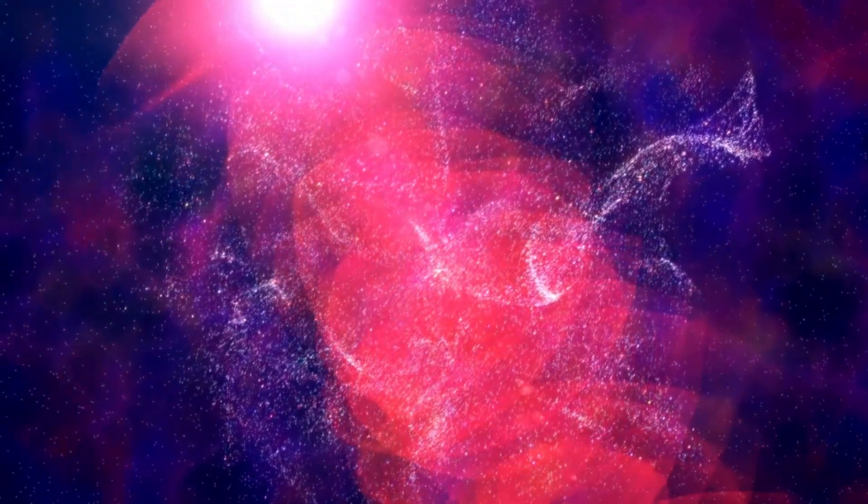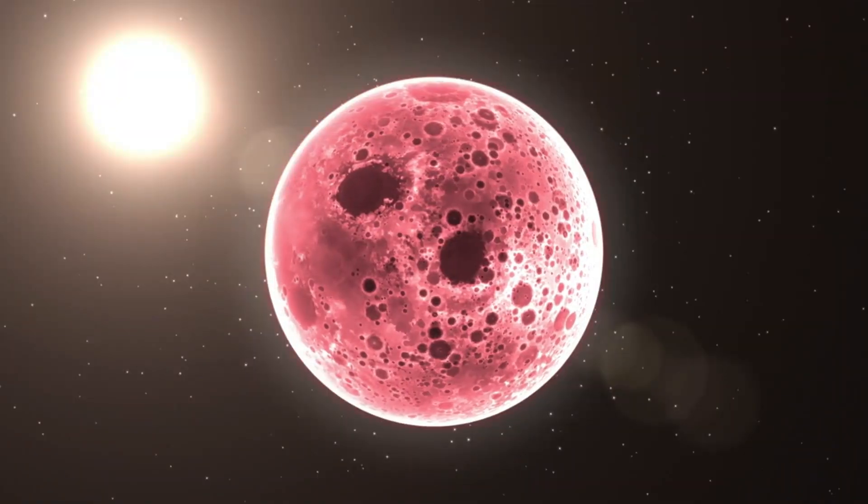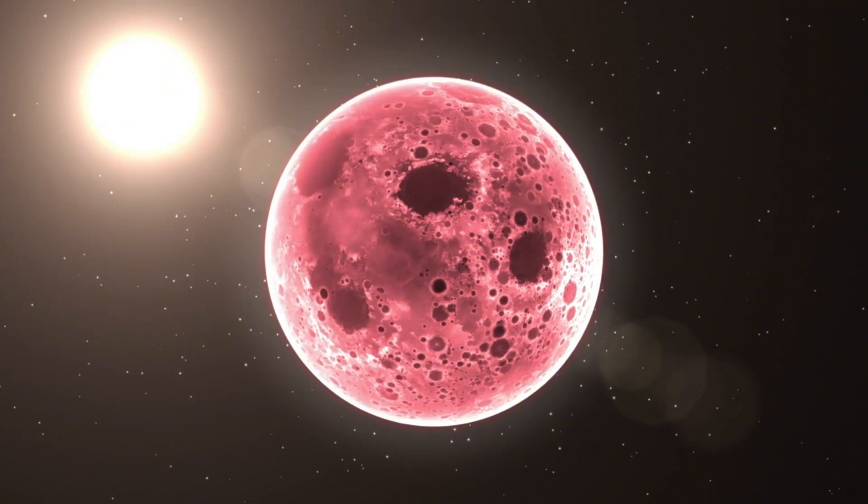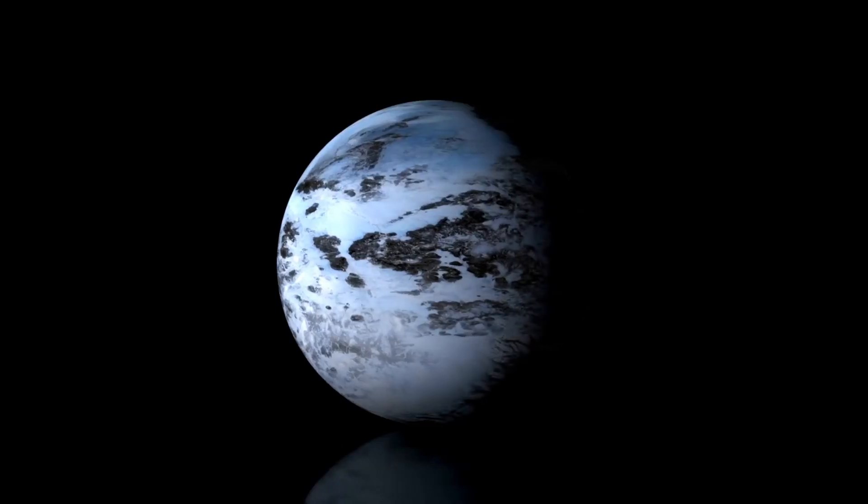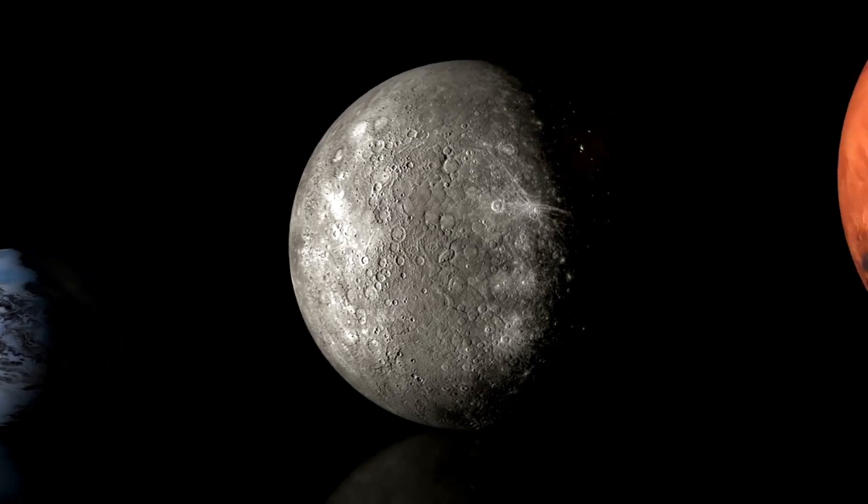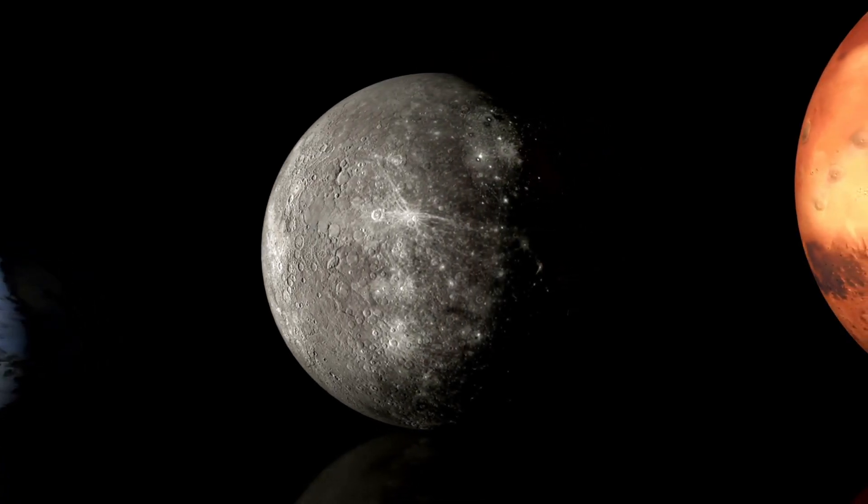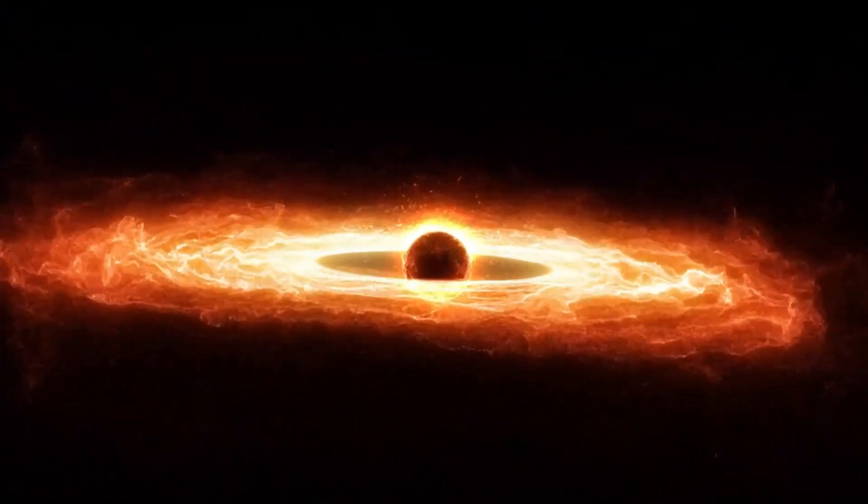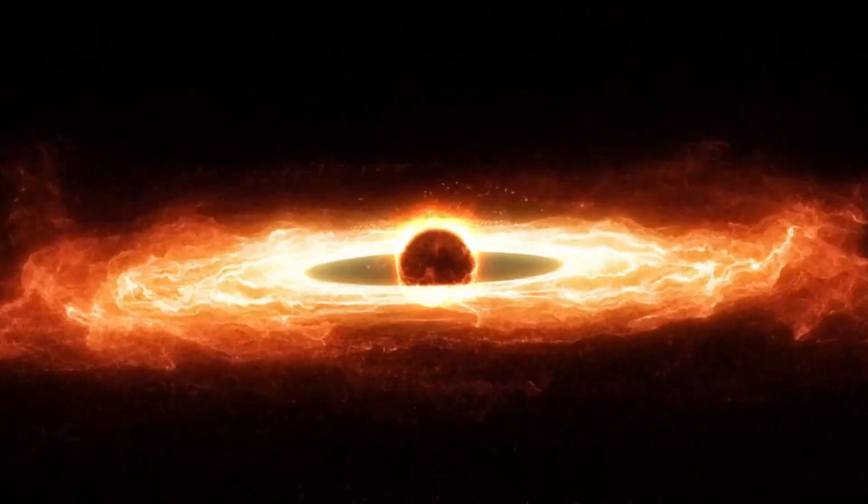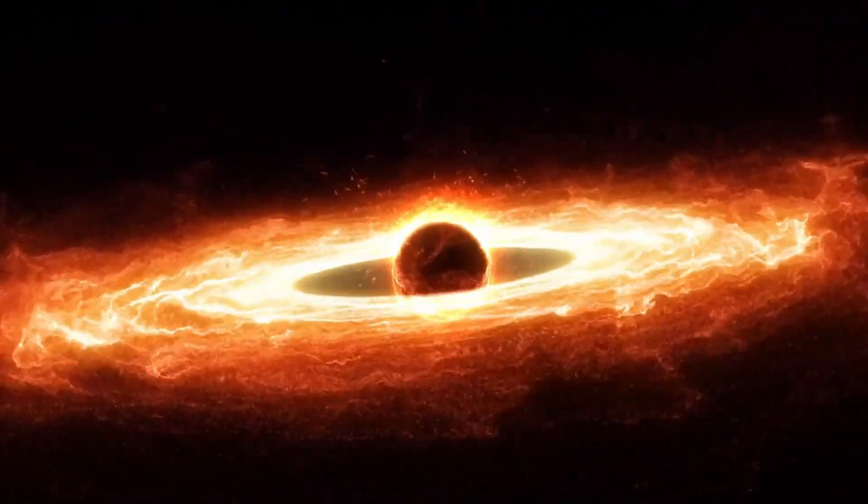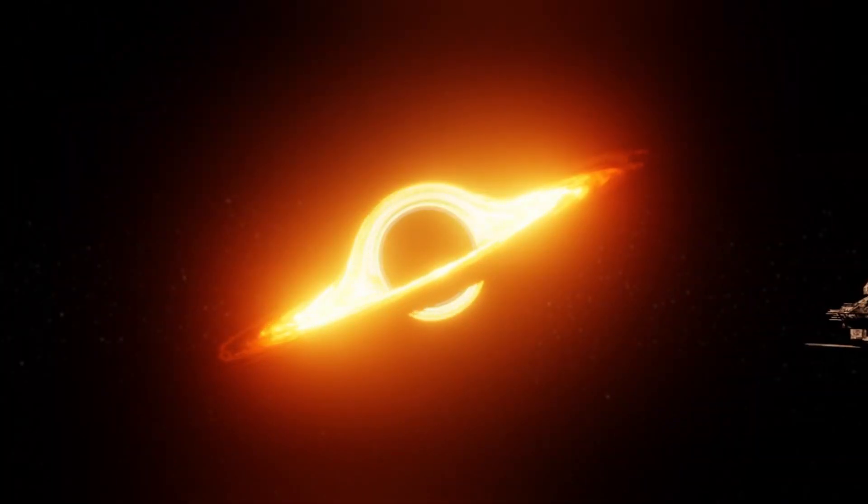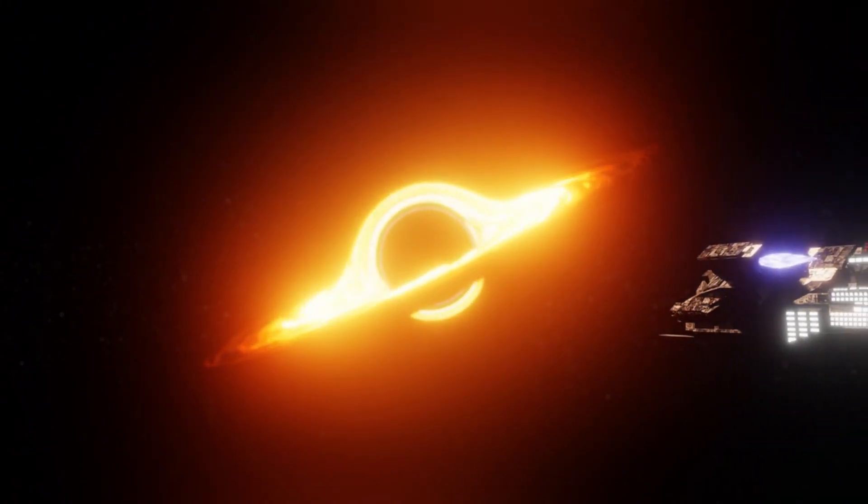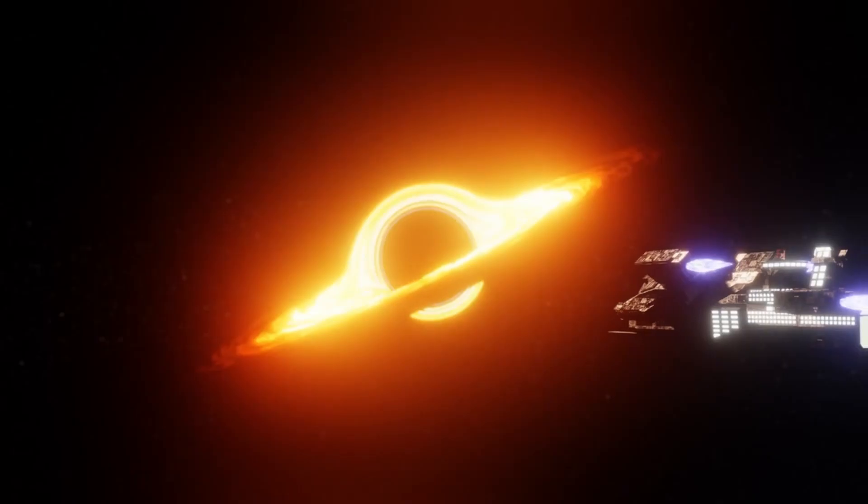As these collapses happen, something odd occurs near their surfaces. Time itself starts to play tricks. From the perspective of someone far away, time appears to slow down near the event horizon, the last point of no return for anything falling into a black hole. It's as if the star's clock ticks at a different speed compared to our own. Sometimes, when two smaller black holes collide, they merge to form a much larger and more terrifying black hole.